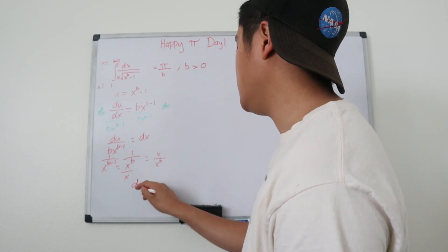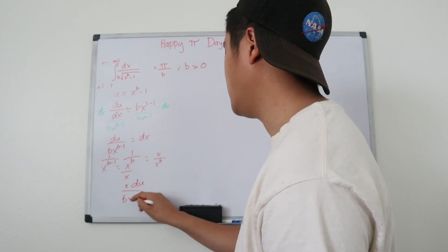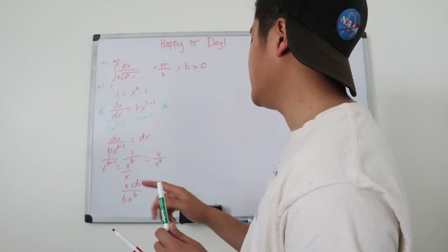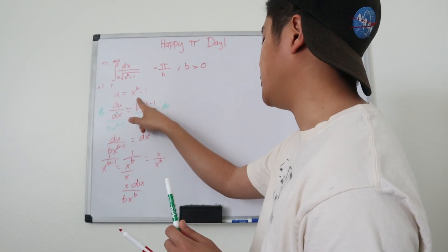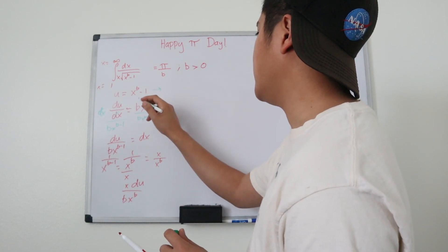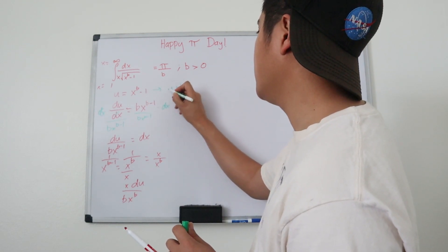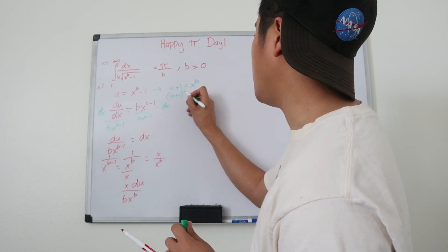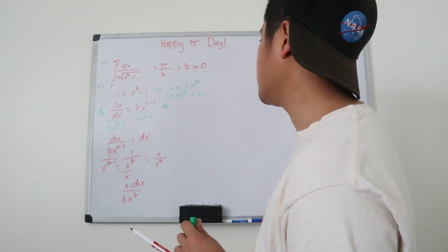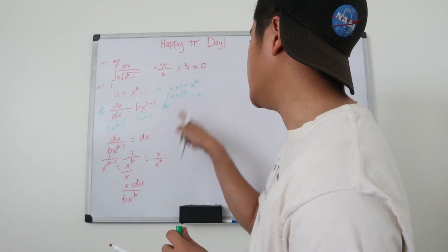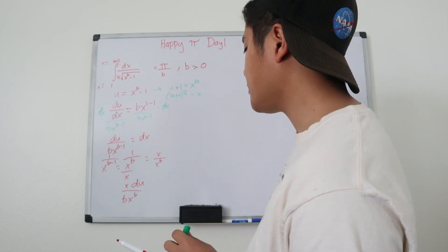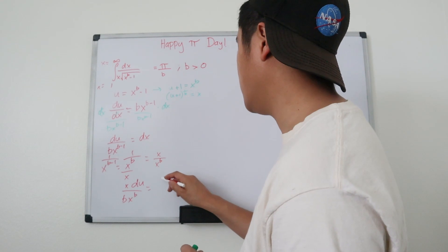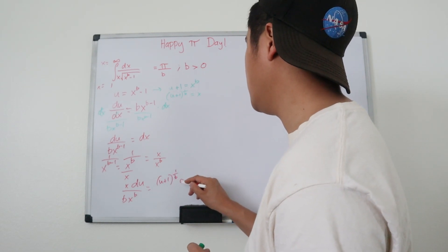We still want to rewrite this in terms of u. Remember that u equals x to the b minus 1, so u plus 1 equals x to the b, and then u plus 1 raised to the 1/b power equals x. So our differential becomes: x is u plus 1 to the 1/b, and x to the b is just u plus 1. The differential is u plus 1 to the 1/b times du over b times u plus 1, which equals dx.